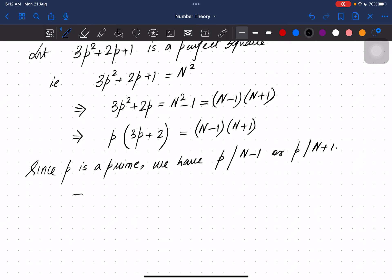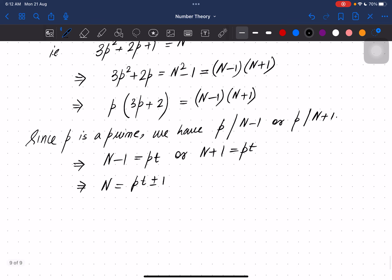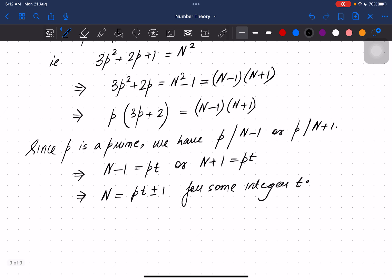In any case, N-1 equals some pt or N+1 equals some pt. So N is pt ± 1 for some integer t. Clearly t has to be greater than 1 because if t equals 1 then this is not possible. So t equals 1 is not possible.